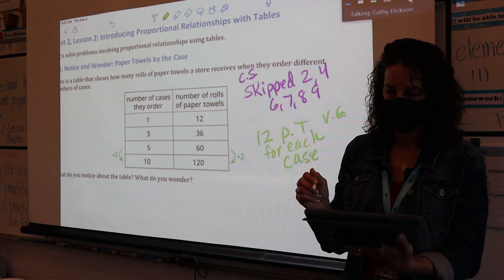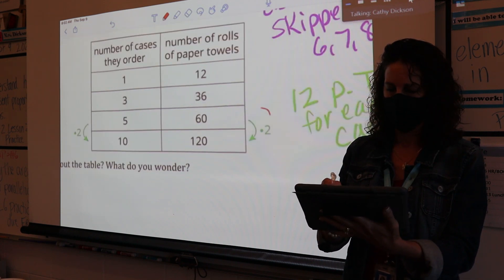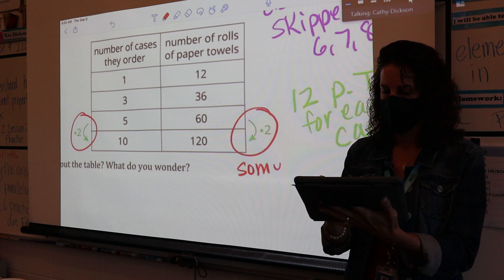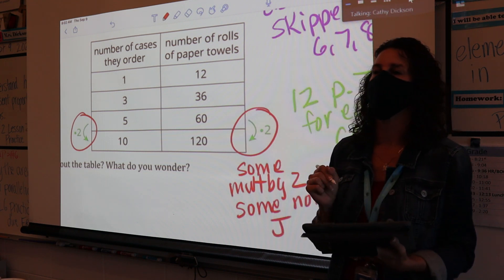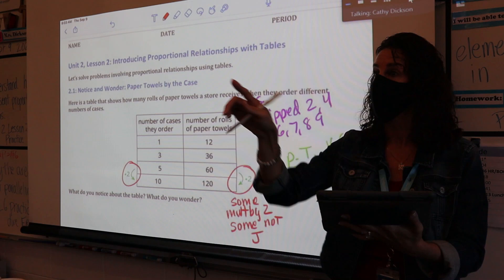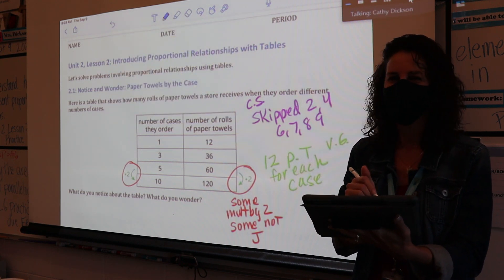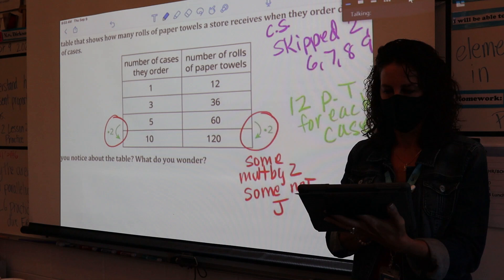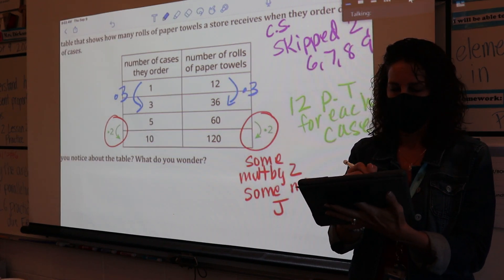Okay, what else do you notice and wonder? Okay, so you're noticing this right here. So you're noticing some are multiplied by 2, some not. I'm just going to put J because I actually forgot the first letter, so we're just going to leave it as J. All right, excellent. One, two, three. Good, we're celebrating everybody's contribution. Yes, to add on to what he was saying, we don't want to name students, okay?